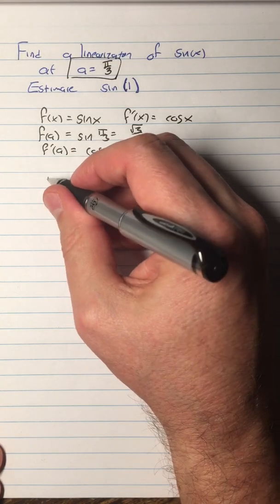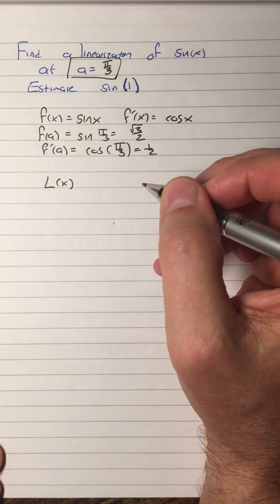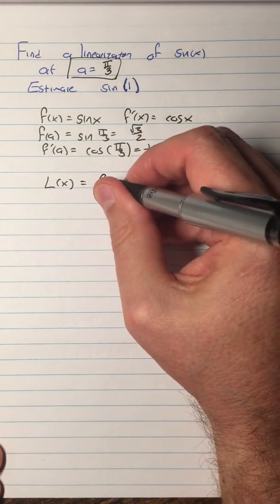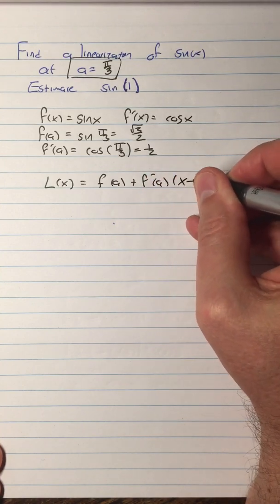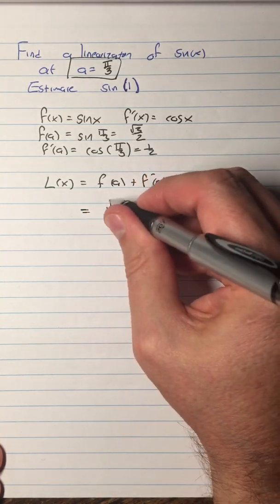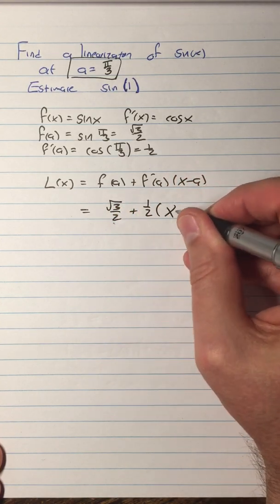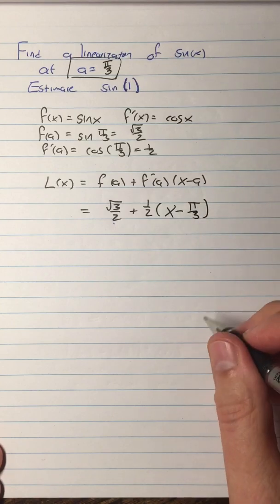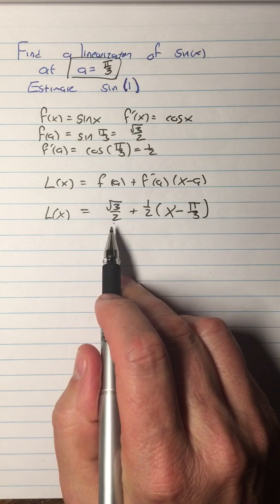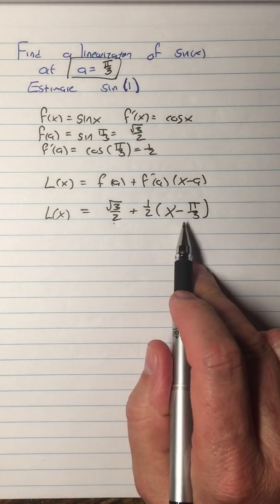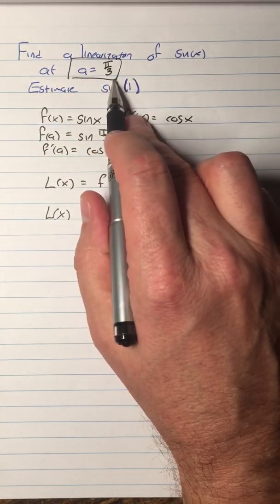So the linearization of sine at a equals π/3 is f(a) + f'(a) times (x - a). So that is √3/2 + 1/2 times (x - π/3). When somebody asks you, write the linearization of sine at a equals π/3, that's what this equation is.